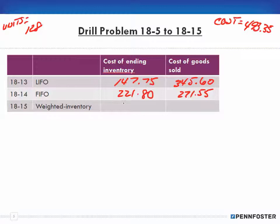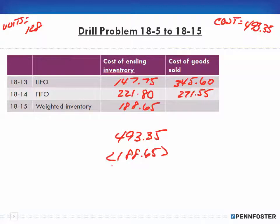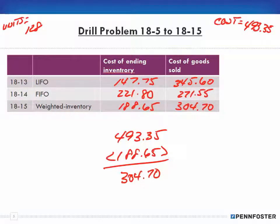Cost of goods sold under weighted average is simply $493.35 − $188.65 = $304.70. And that's all there is to it for FIFO, LIFO, and weighted average.